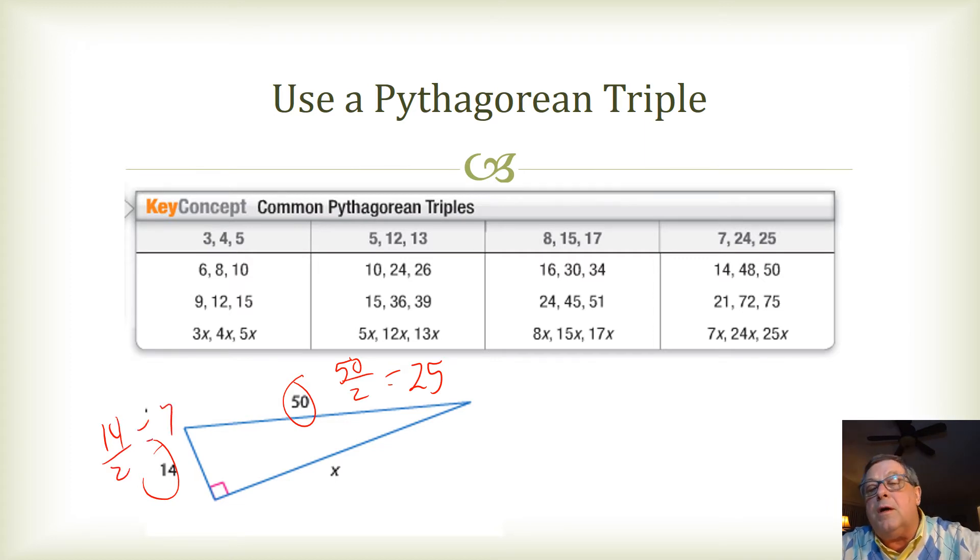So, I'm looking for, oh, well, here's a 7, 24, and 25. And so, there I could use this Pythagorean triple. Here's the 7. Here's the 25.